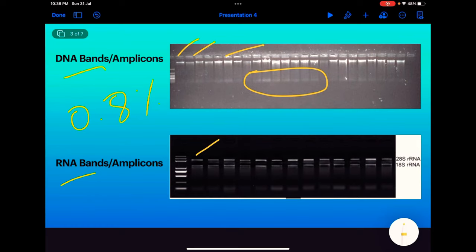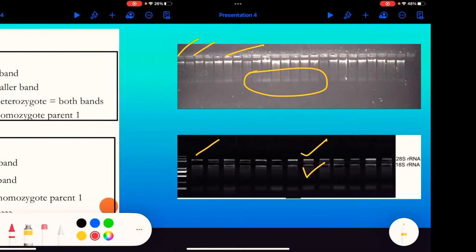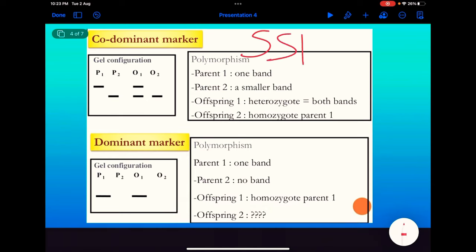Now to understand more about the topic, we need to know about the nature of the marker. For example, SSR, that is simple sequence repeats. SSR is a co-dominant marker, it means it can differentiate between two genotypes.